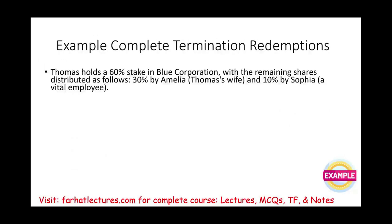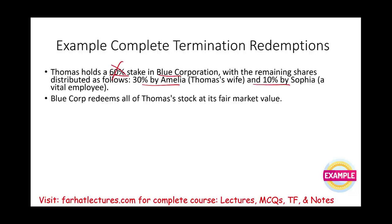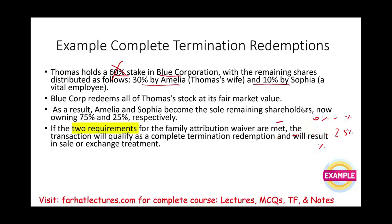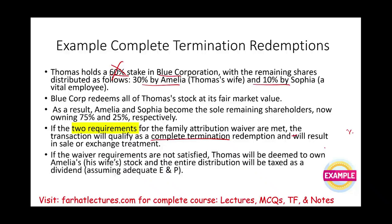Example: Thomas holds 60% in Blue Corporation. The remaining shares are owned by his wife Amelia (30%) and Sophia (10%), a key employee. Blue Corporation purchases all of Thomas's shares at fair value. What remains: Amelia owns 30 out of 40 — now 75% — and Sophia owns 10 out of 40 — now 25%. If the two requirements for the family attribution waiver are met, the transaction qualifies as a complete termination and results in a sale for Thomas. If not, Thomas is deemed to own his wife's shares and the entire distribution is taxed as a dividend.